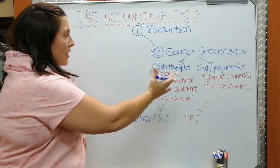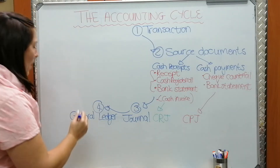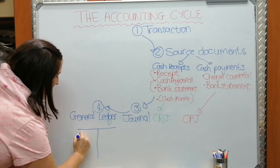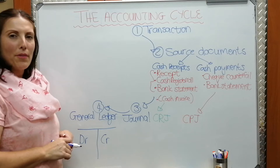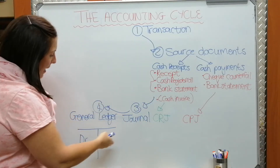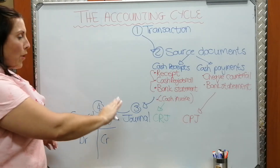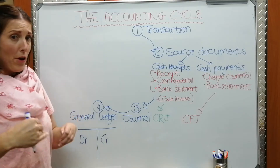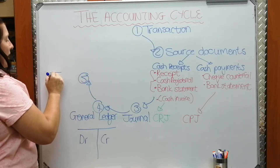The General Ledger is a summary of the transactions that took place in the CRJ and CPJ. You may have heard of T-accounts — they look like a capital T, with every account having a debit side and a credit side. At the end of the month we take information from the journals to our General Ledger, and then we summarize it further to prepare step five: a trial balance.